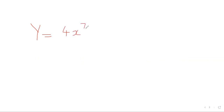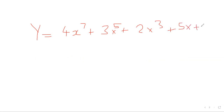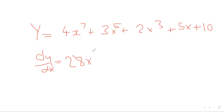All right, so if we have dy for 4x to the power 7 plus 3x to the power 5 plus 2x to the power 3, when we differentiate this, it will be dy/dx. Four times seven is 28, giving us 28x to the power 6. Then here, what do we have?